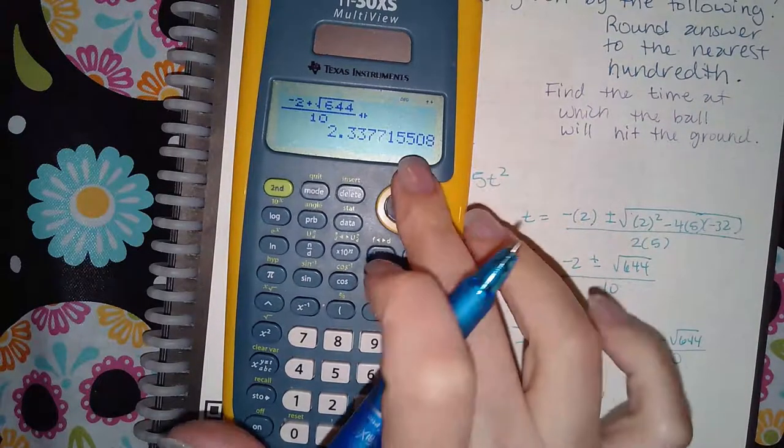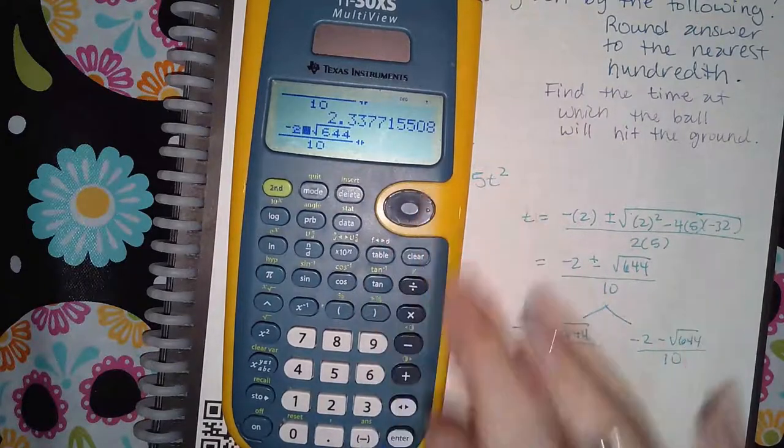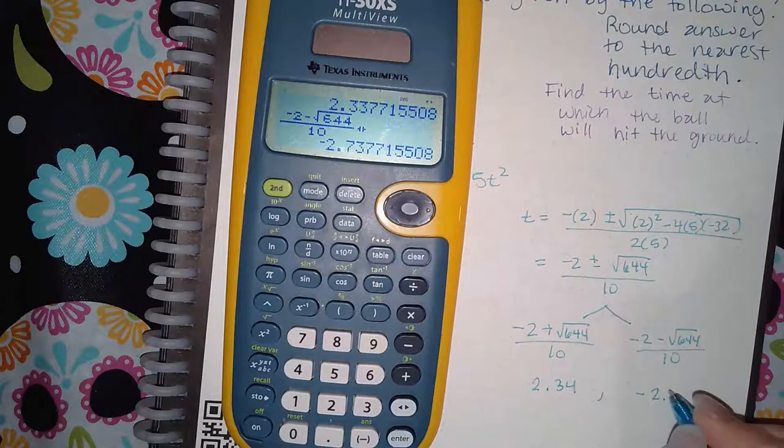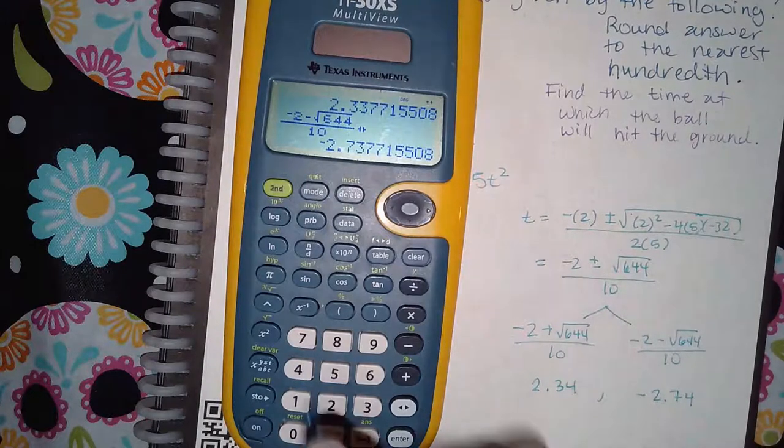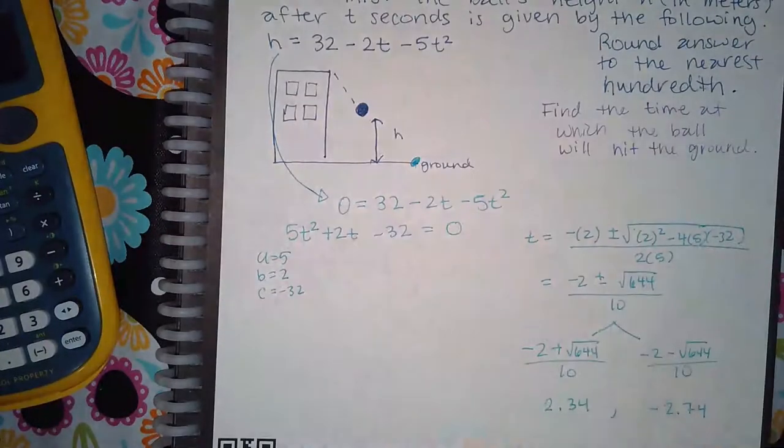Then I'm going to do the same thing for the other one, but I'm going to just change this to a minus. And I get negative 2.74 because this 7 will change that 3. So I have my two answers here.